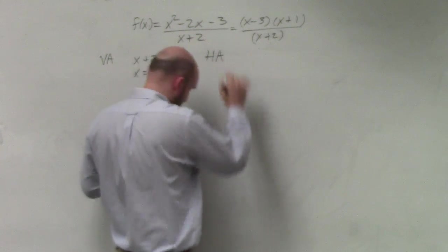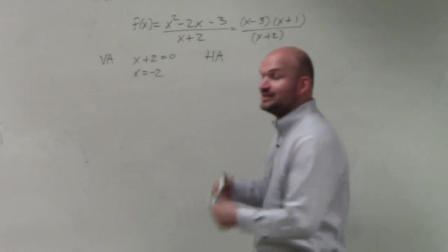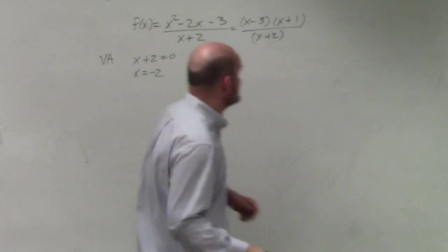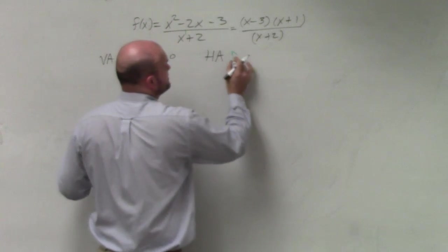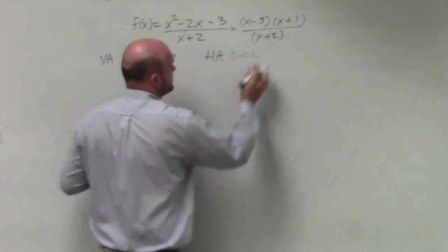Horizontal asymptote. Again, we need to compare the numerator and the denominator. Or I'm sorry, the degree in the numerator and the denominator. In this case, the degree in the denominator is less than the degree in the numerator.